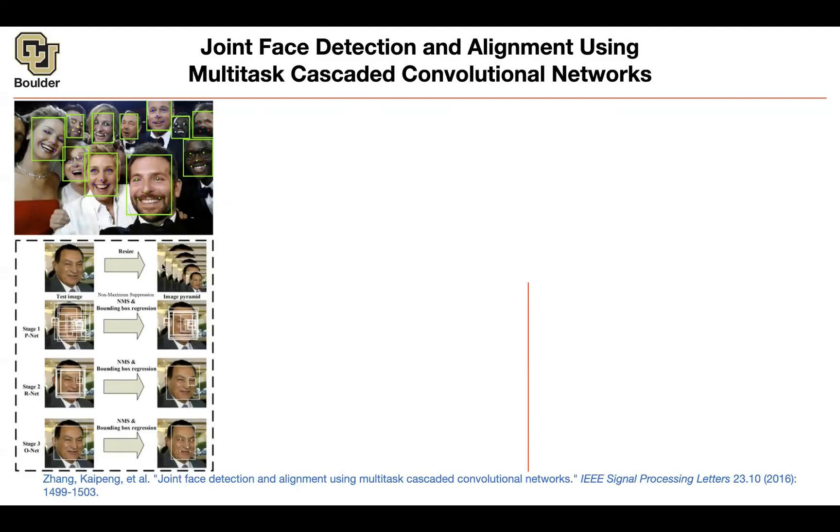First of all, you're going to use images at multiple scales, which is called image pyramid. Each one of these neural networks is going to look at a different scale: low resolution, higher resolution, and the highest resolution in your image pyramid.